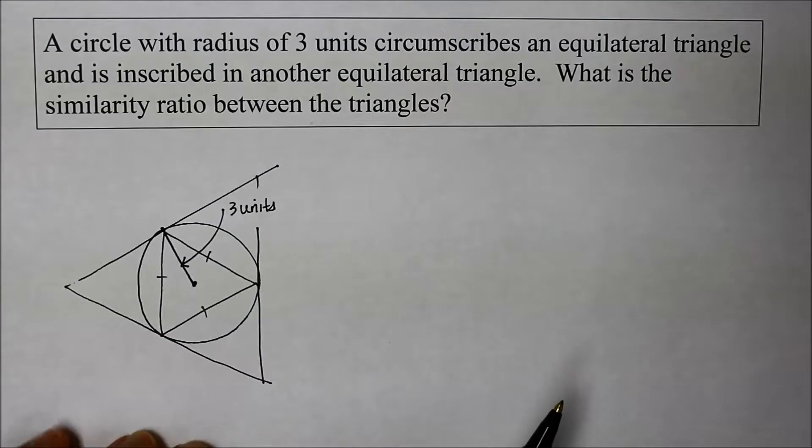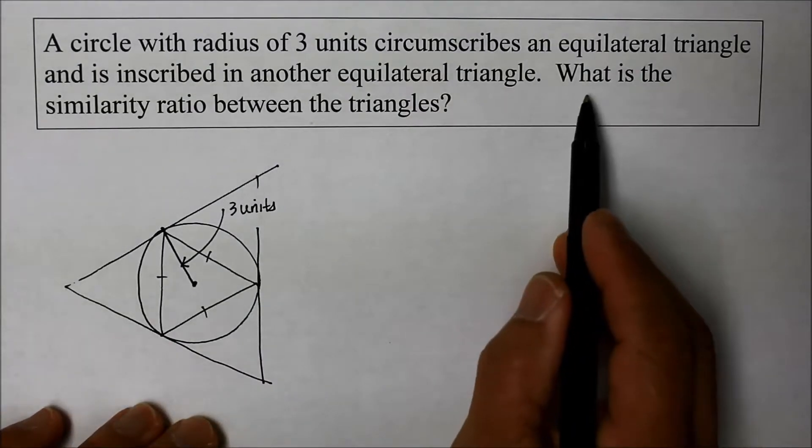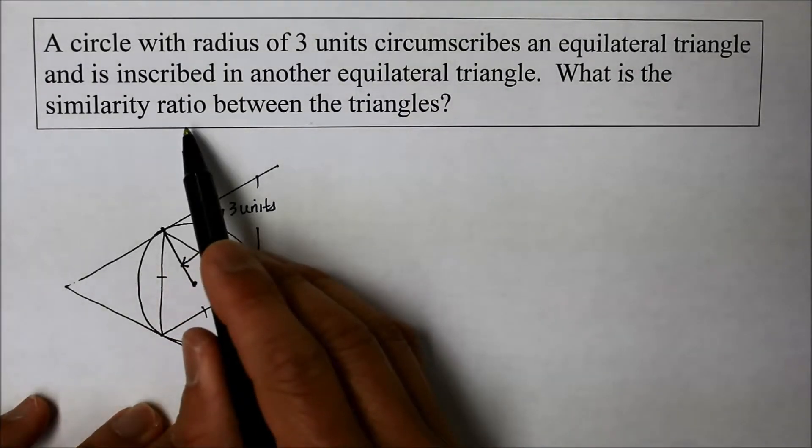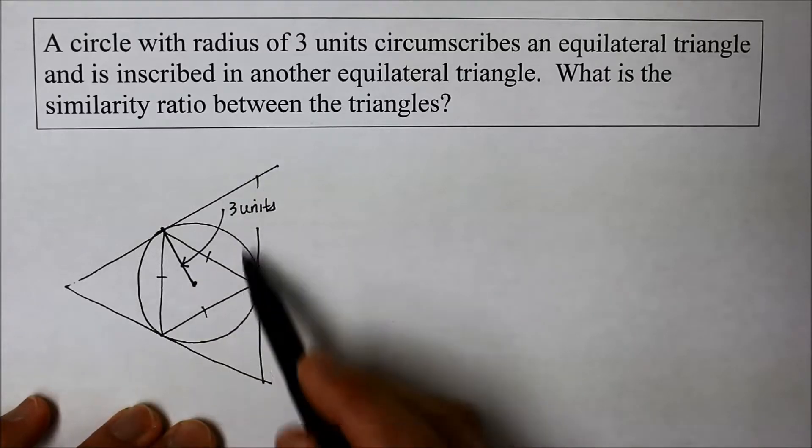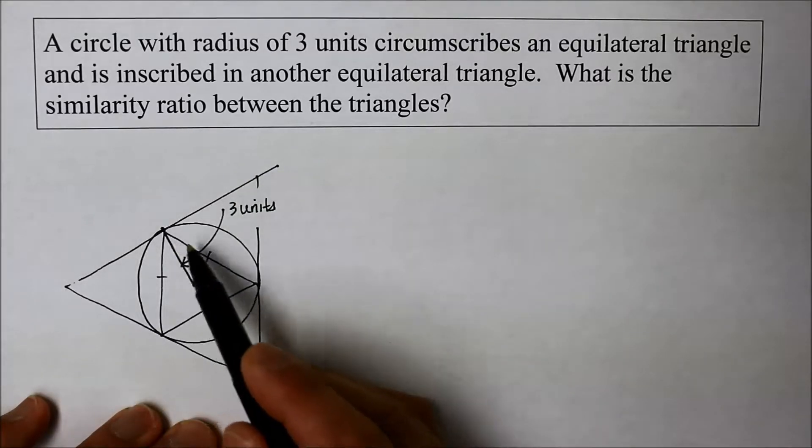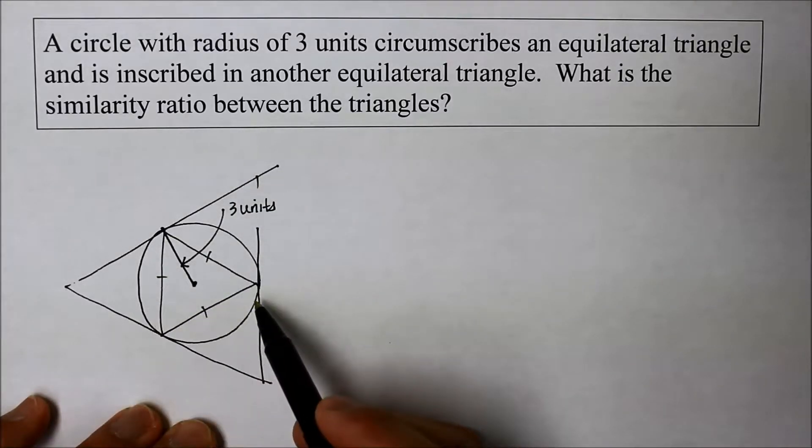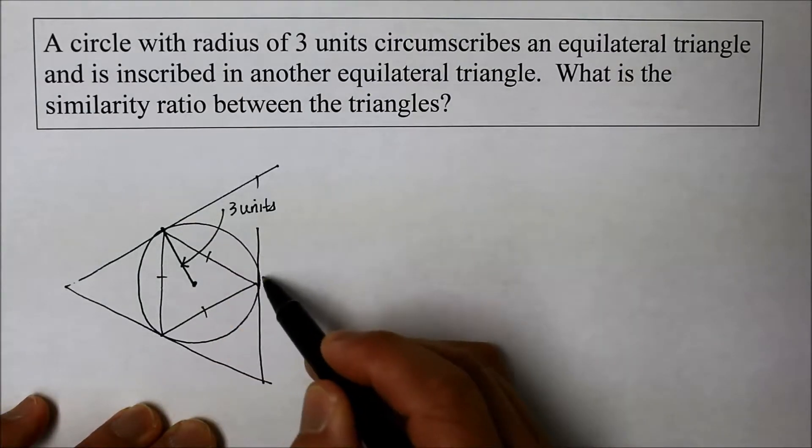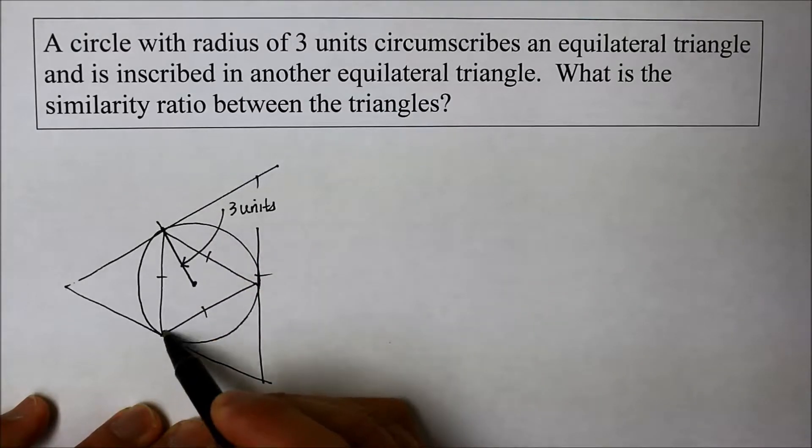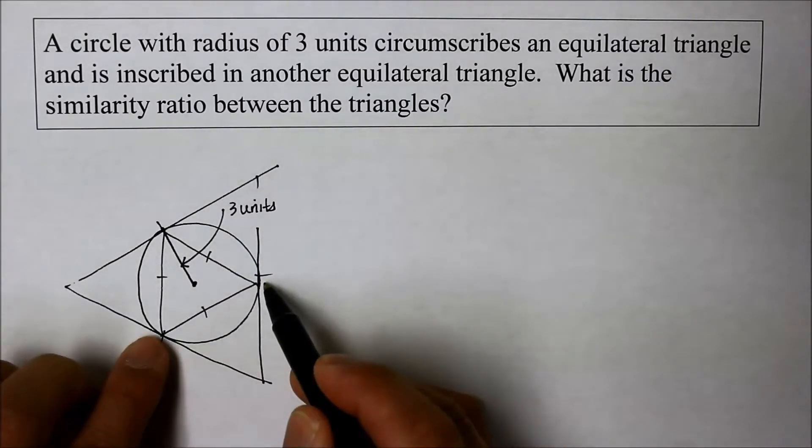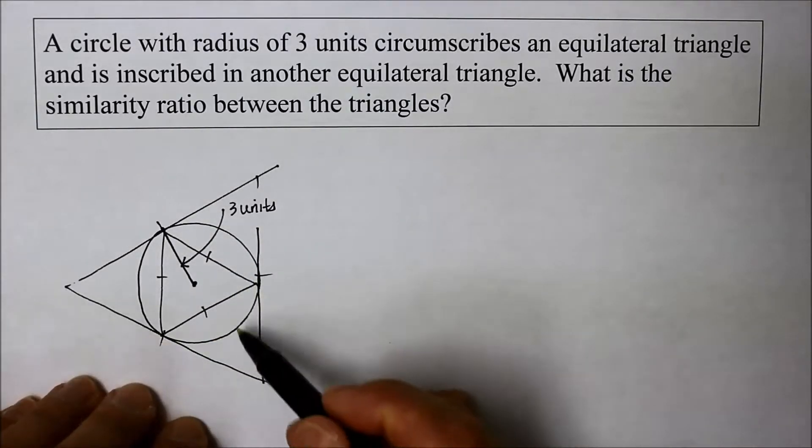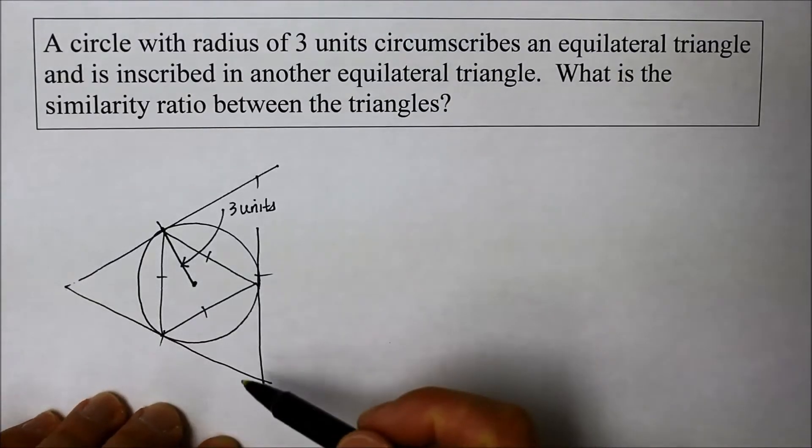All right. So now the question is, what is the similarity ratio between the big one and the little one inscribed inside a triangle right here? And it says that the big one is another equilateral. So the three sides of that outer triangle is also an equilateral, just like the inside. So how do you figure this out? So this is what I do.